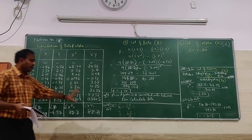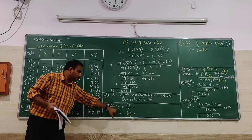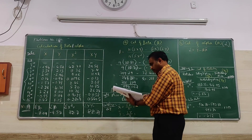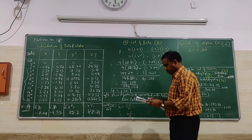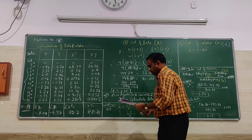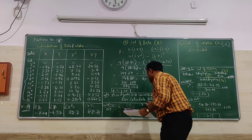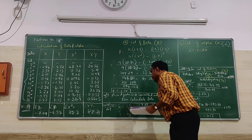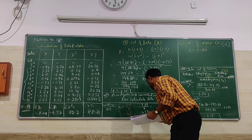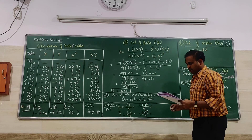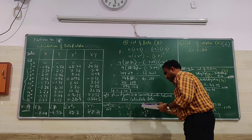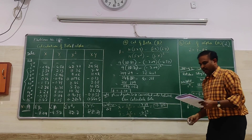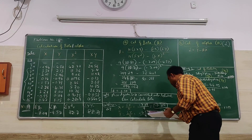Next is the calculation of alpha. For this you need Working Number 2: X-bar and Y-bar. X-bar = summation X divided by N = minus 7.09 divided by 9 = minus 0.787. Y-bar = summation Y divided by N = minus 4.57 divided by 9 = minus 0.507.